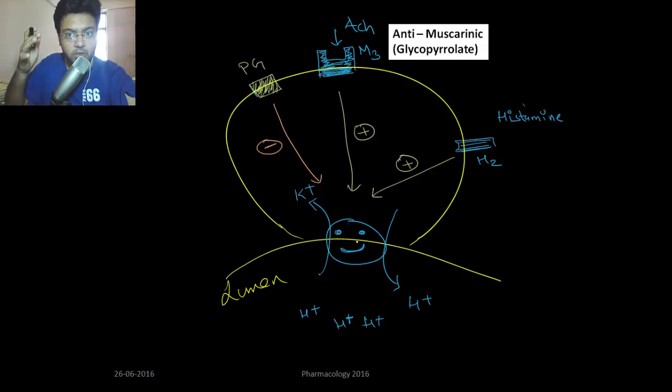Remember glycopyrrolate, which is a derivative of quaternary amine structure and cannot cross the blood-brain barrier. Histamine also stimulates acid secretion by activating the proton pump. If you want to decrease acid secretion, you give antihistamines.